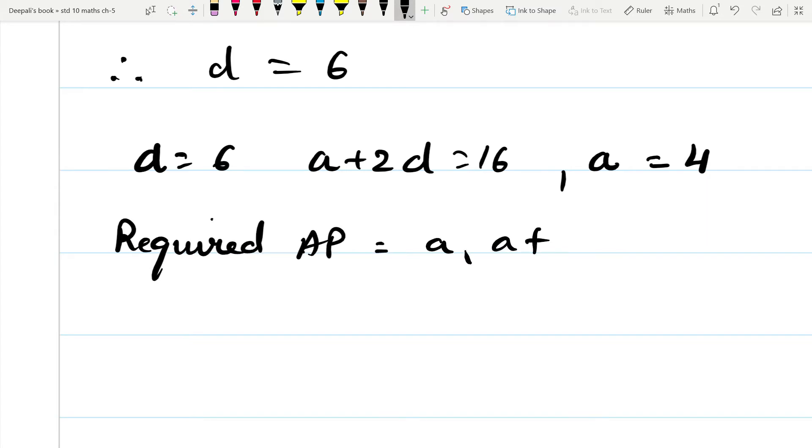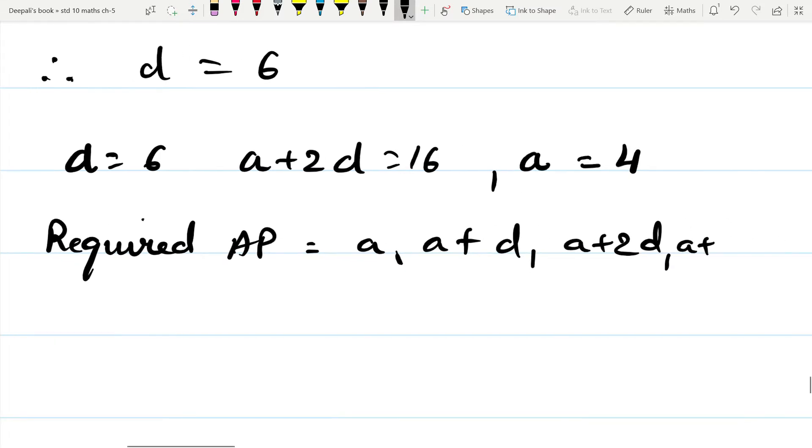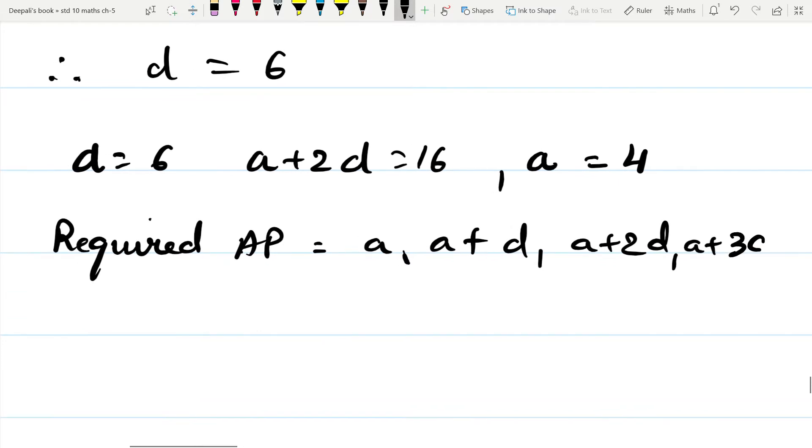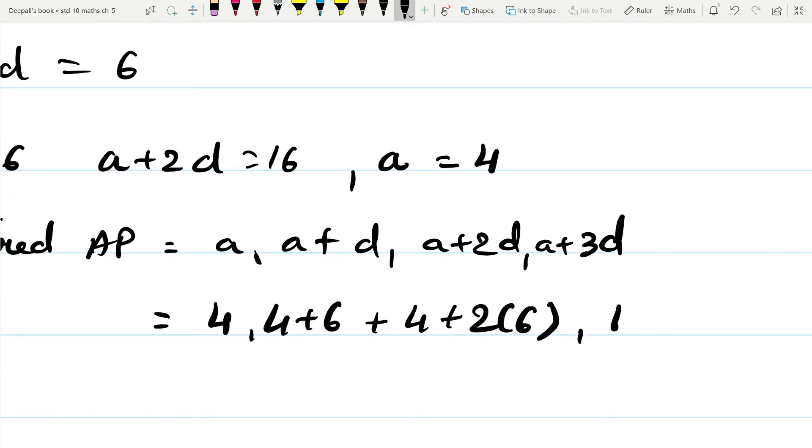Now the required AP will be A, A plus D, A plus 2D, A plus 3D. So we get 4, 4 plus 6, 4 plus 2 into 6, and 4 plus 3 into 6. That is equal to 4, 10, 16, 22.